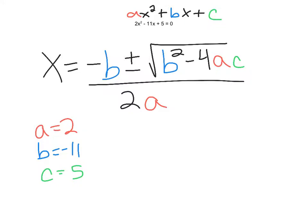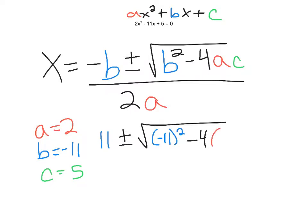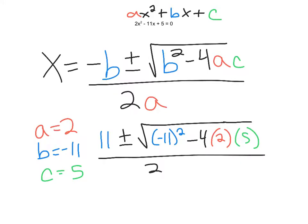Now I'm going to substitute those in. Everywhere that I have a color, I'm going to match that up. So I have the opposite of b — well, b is negative 11, so the opposite would be positive 11. I have plus or minus, and then the square root of negative 11 squared minus 4 times 2 times 5, all over 2 times 2. You'll notice I substituted into parentheses.